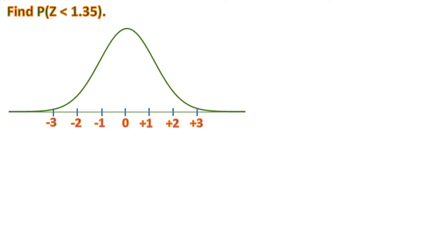If you cut the normal curve exactly in the middle at 0, the left side is 0.5 or 50%, and the right side is also 0.5.